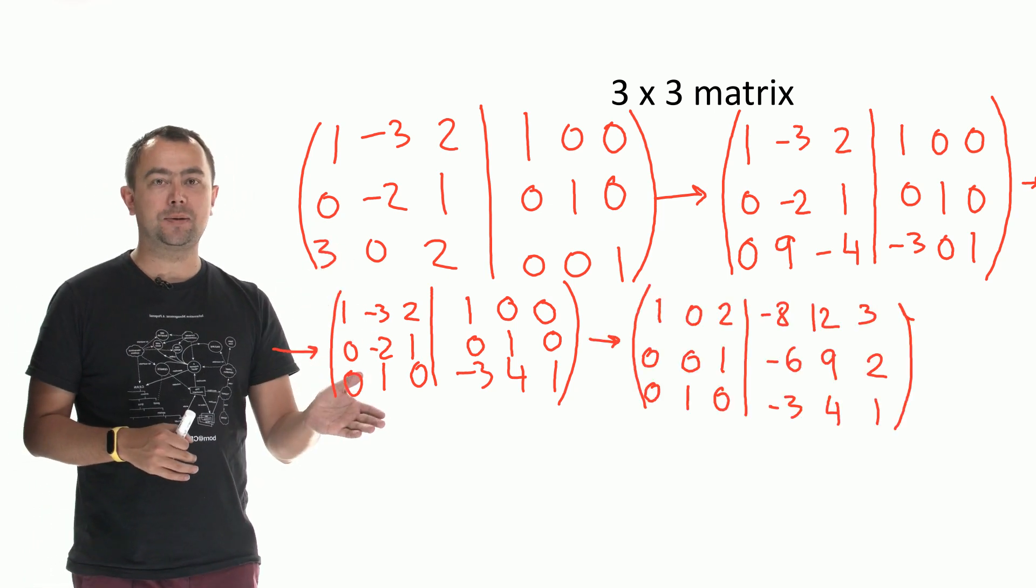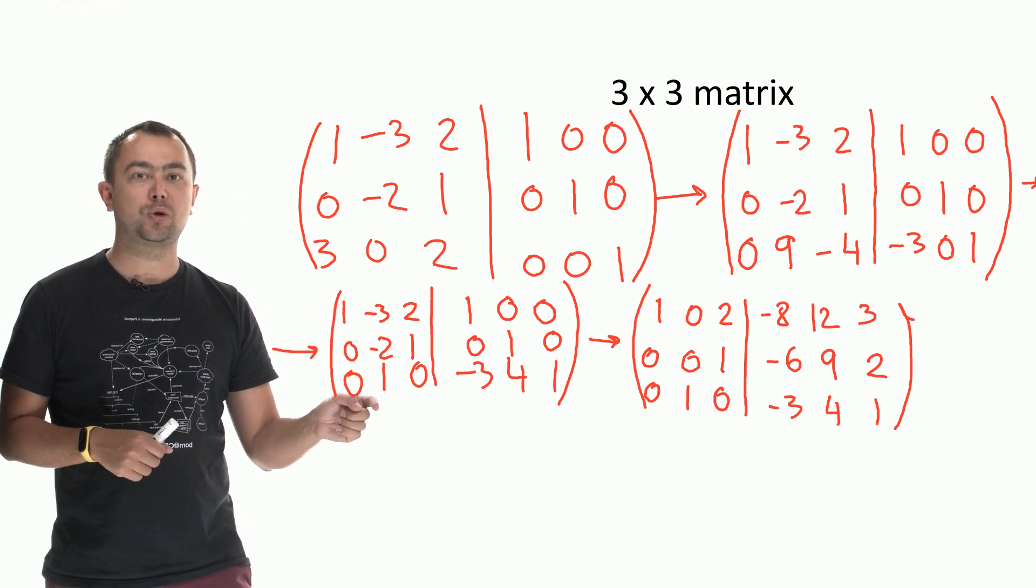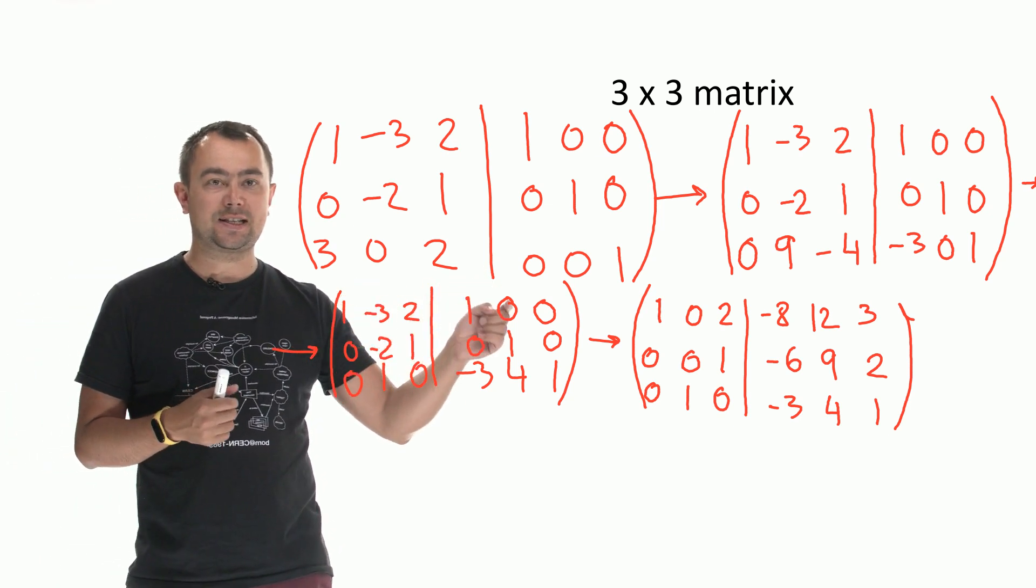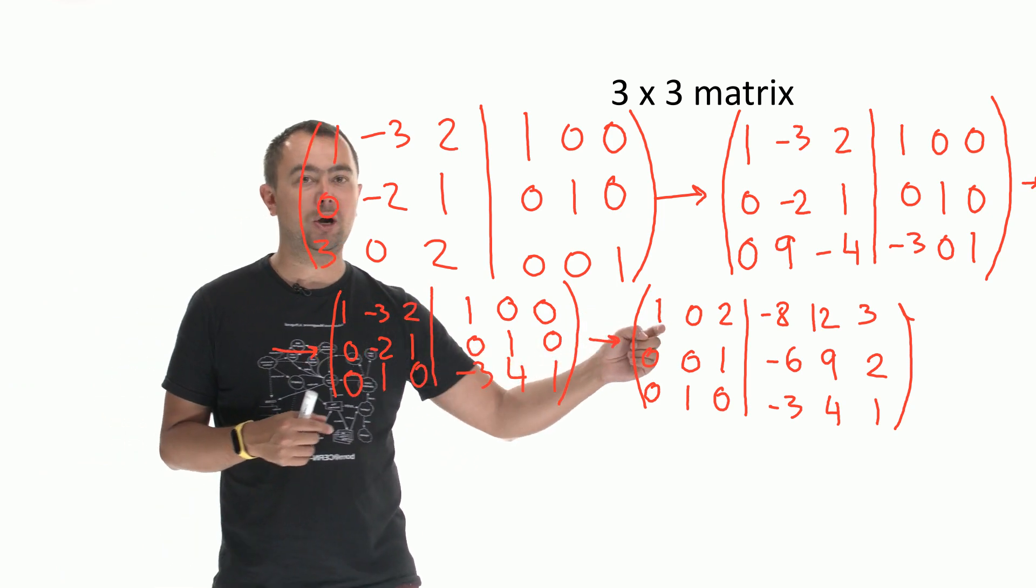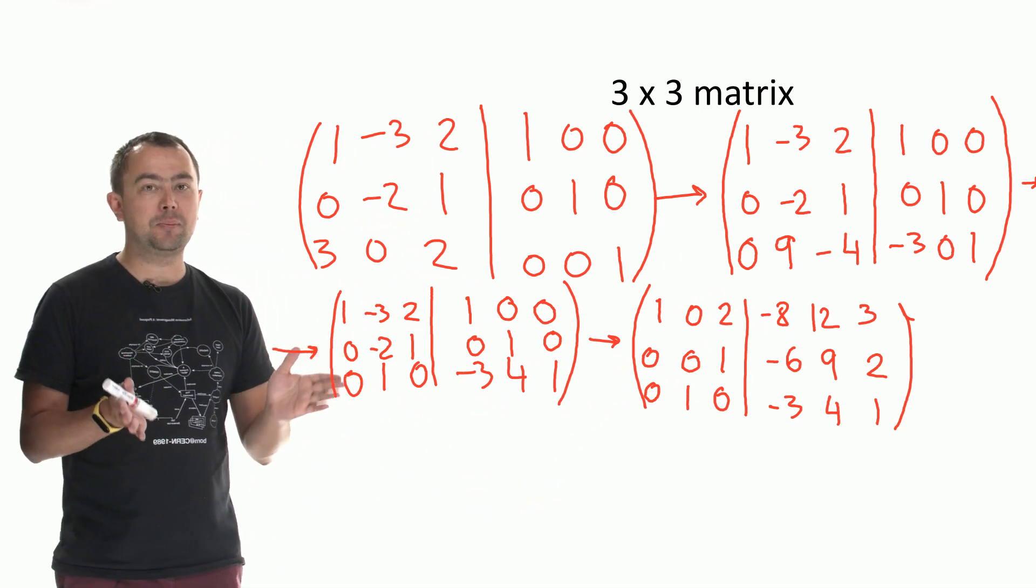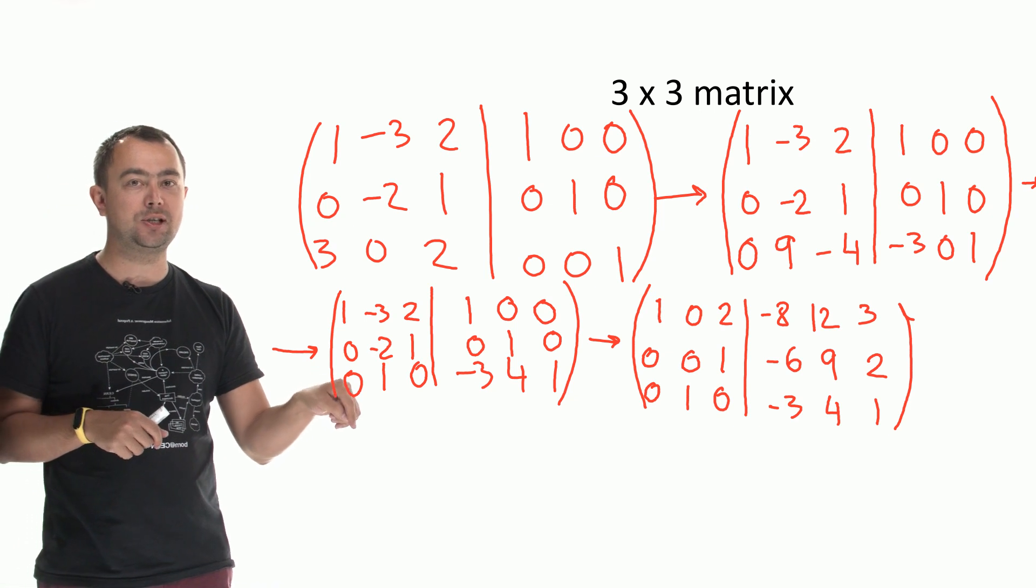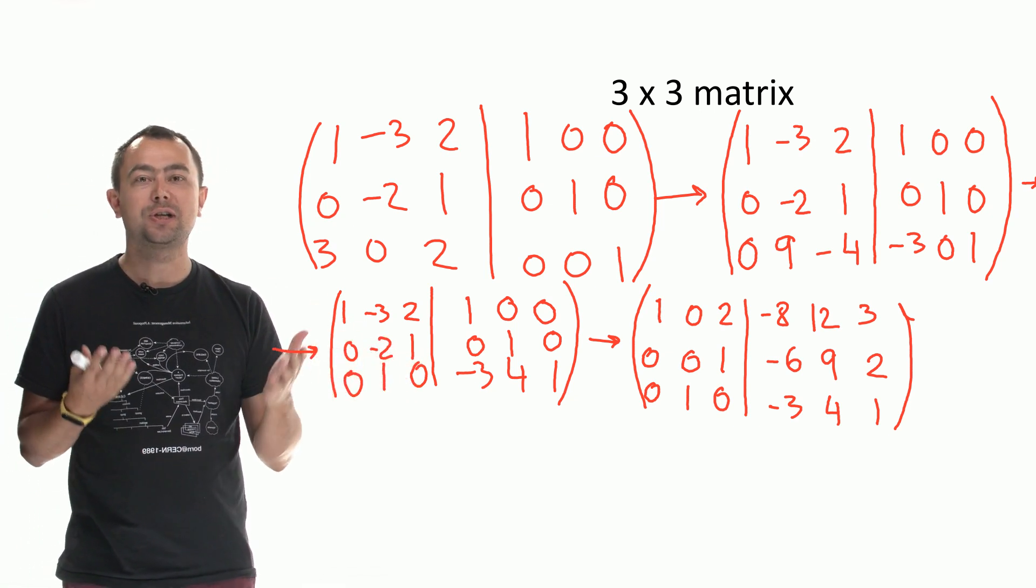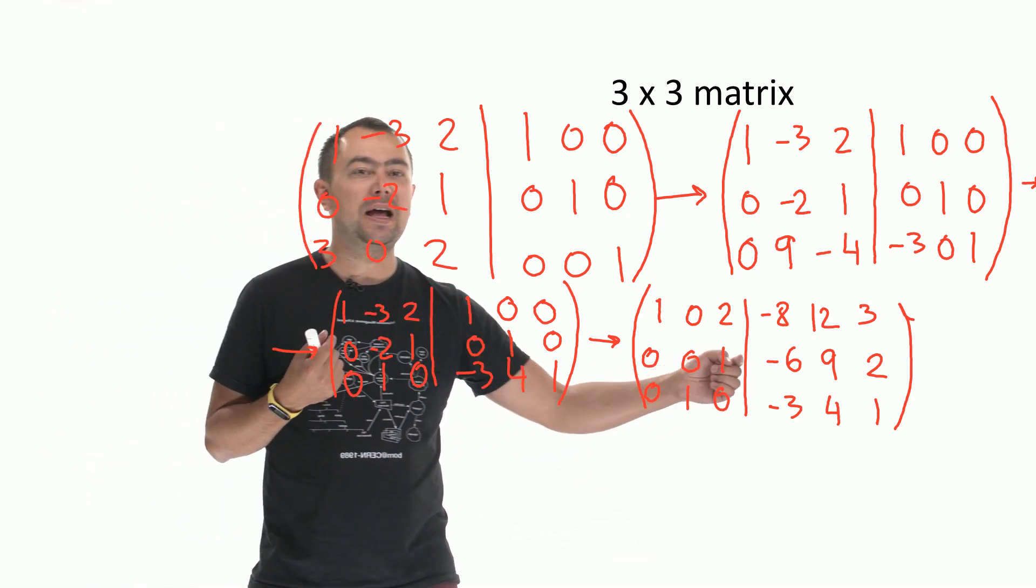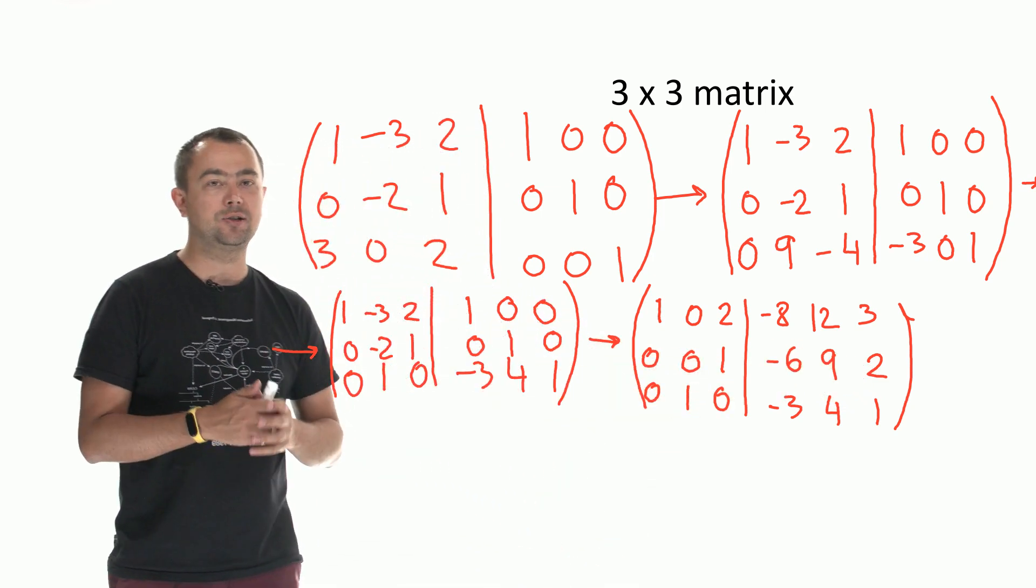So 1 plus 3 times 0 is 1. Minus 3 plus 3 times 1 is 0. 2 plus 3 times 0 is 2. So we have the first row is 1, 0, 2, minus 8, 12, 3. The second row, as I remind you, I have added the third line twice. So 0 plus 2 times 0 is 0. Minus 2 plus 2 times 1 is 0. And 1 plus 2 times 0 is 1. And we did the same with the other matrix. The third row remained unchanged.